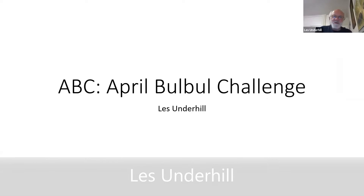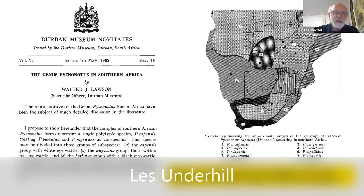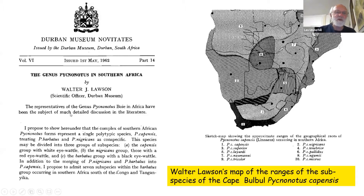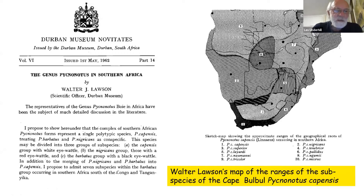We thought we would do an April Bulbul Challenge, and I need to explain why. There was this character at the Durban Museum, Walter Lawson, who says that there's only one species of bulbul in southern Africa — that's the Cape Bulbul, Pycnonotus capensis. I propose to show that the complex of southern African Pycnonotus forms a single polytypic species.